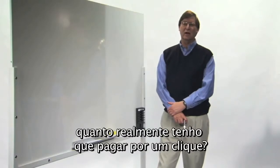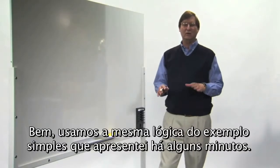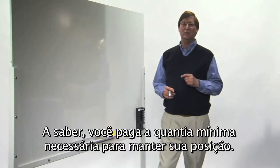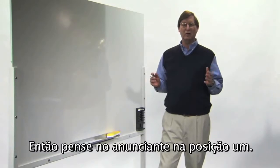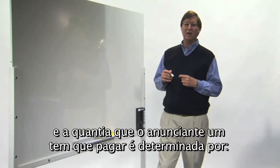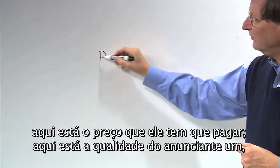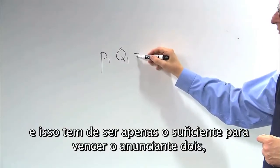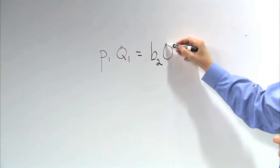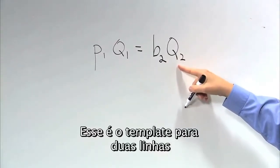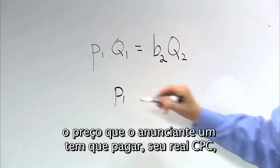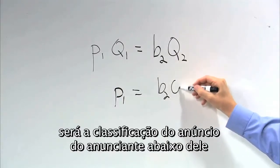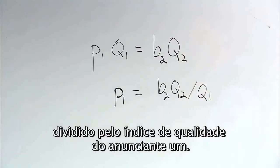Now we know how ads are ranked — but how much do you actually pay for a click? We use the same logic as the simple example: you pay the minimum amount necessary to retain your position. For the advertiser in position 1, competing with the advertiser in position 2, the price P1 times quality Q1 must just beat B2 times Q2. Solving that equation, the actual CPC for advertiser 1 is the ad rank of the advertiser below him divided by the quality score of advertiser 1.